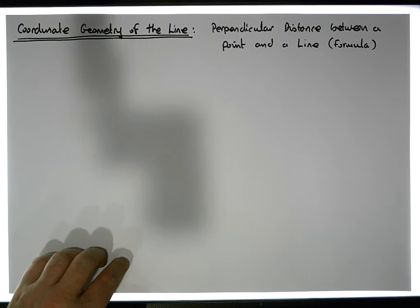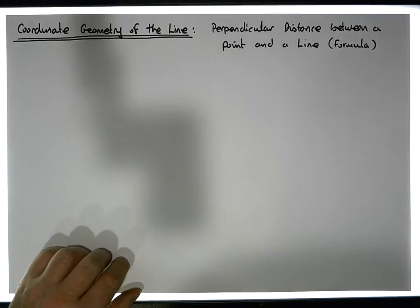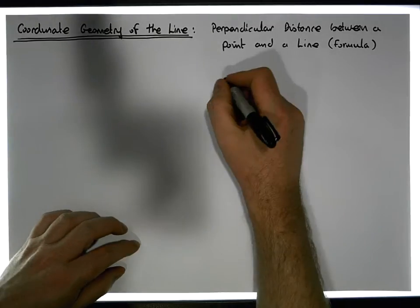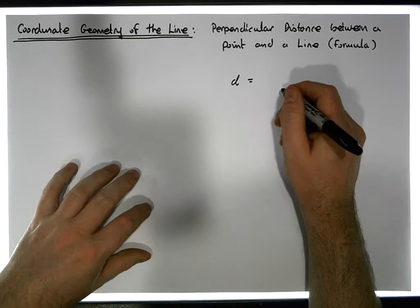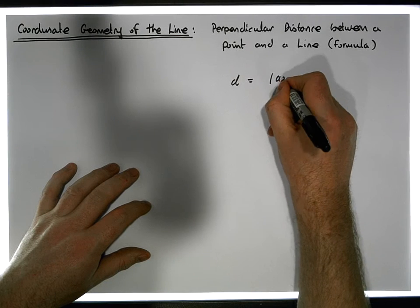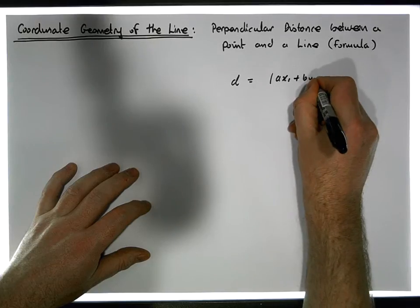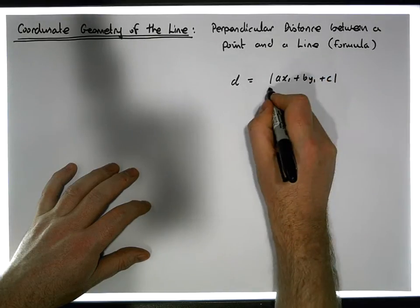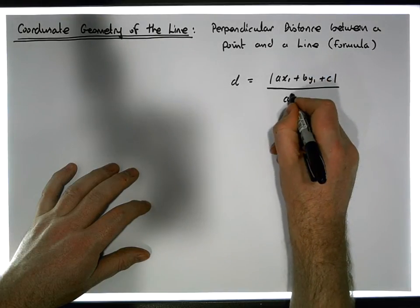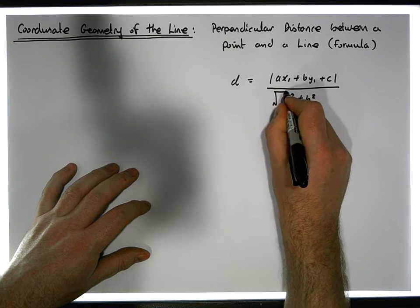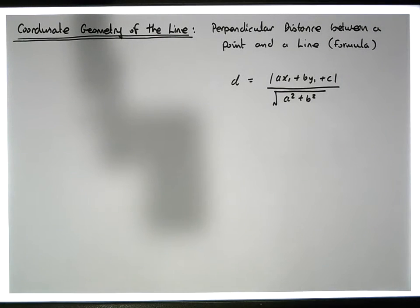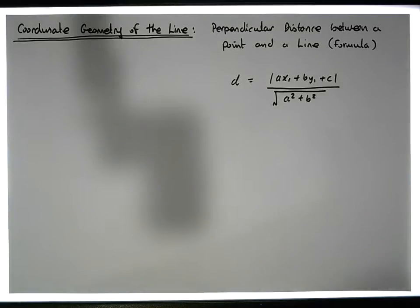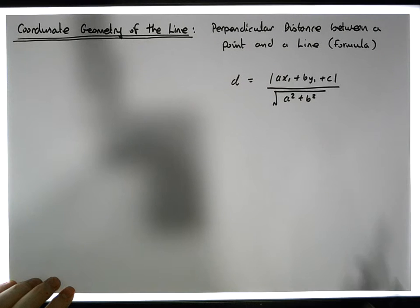Just in case nobody has seen this particular formula before, the formula looks like this. The perpendicular distance is equal to the absolute value of AX₁ plus BY₁ plus C, all over the square root of A squared plus B squared. So given a line AX plus BY plus C equals zero, and given a point (X₁, Y₁), this allows us to calculate the perpendicular distance between the point and the line.